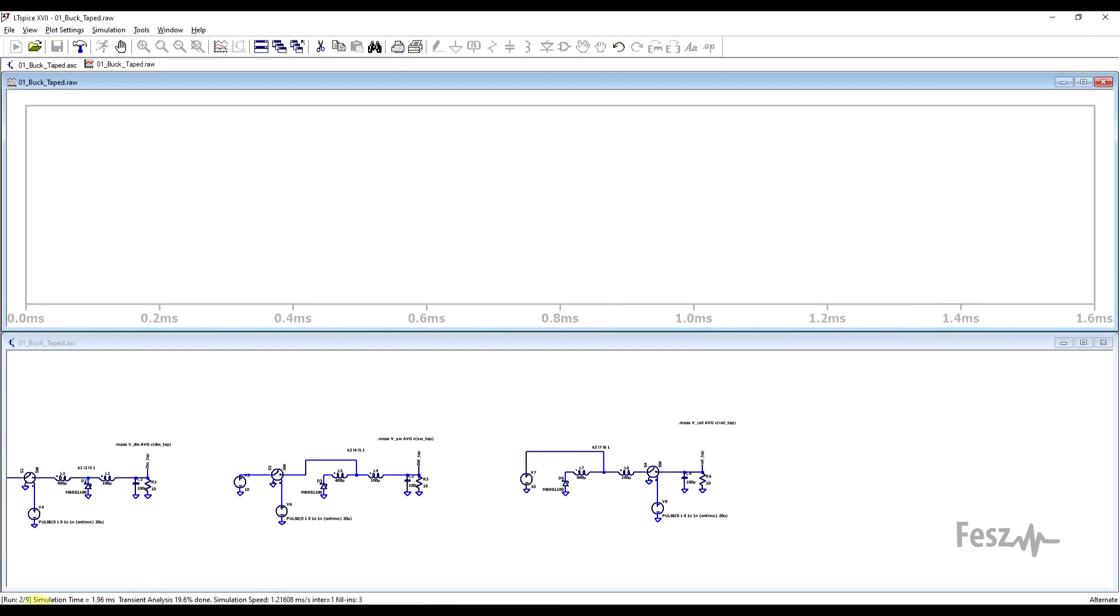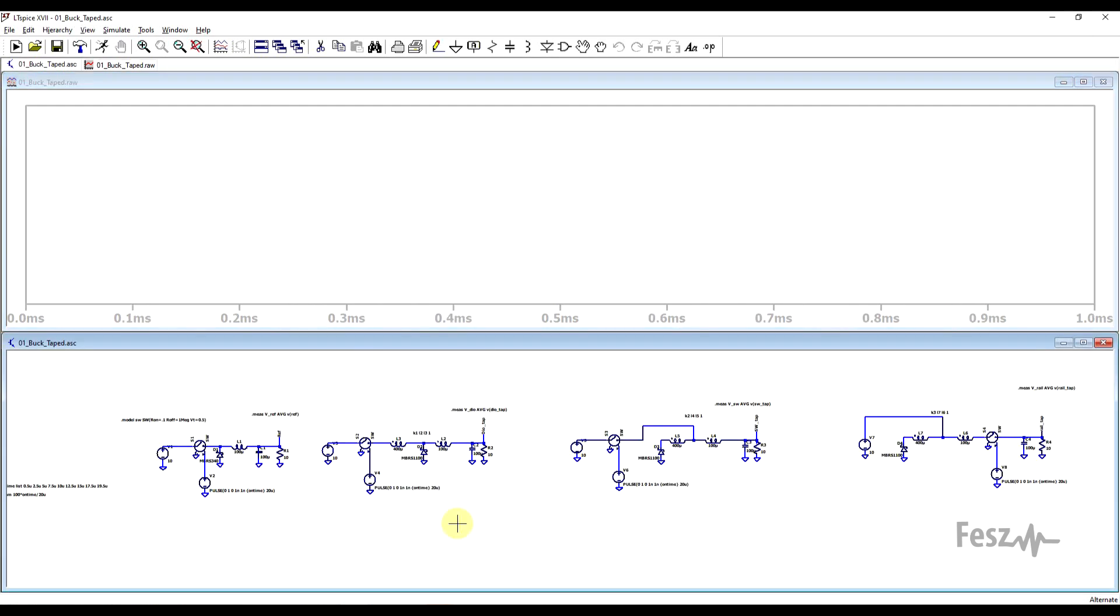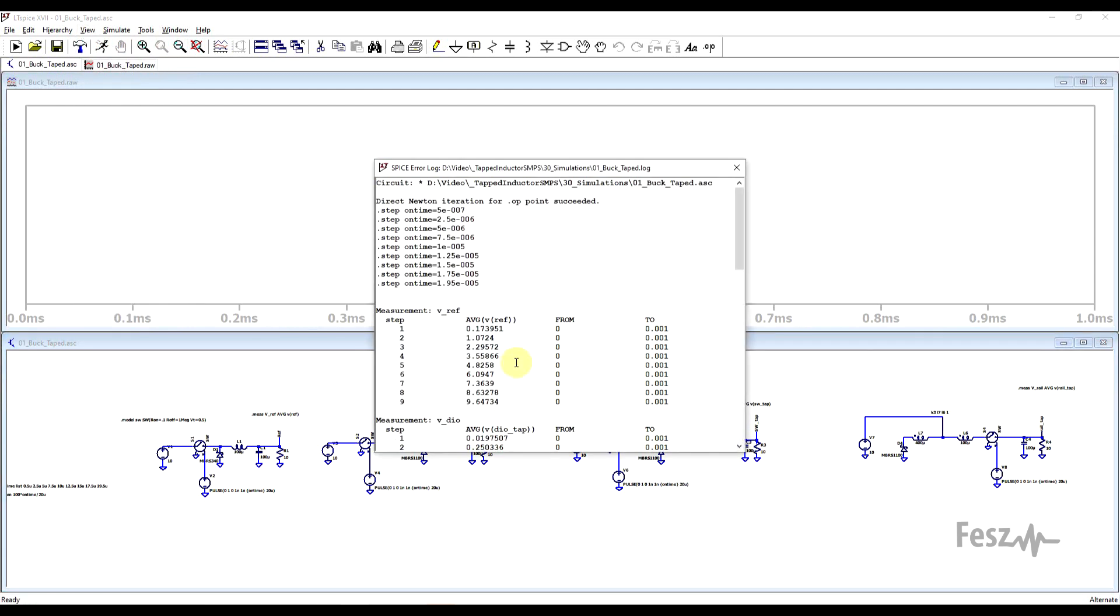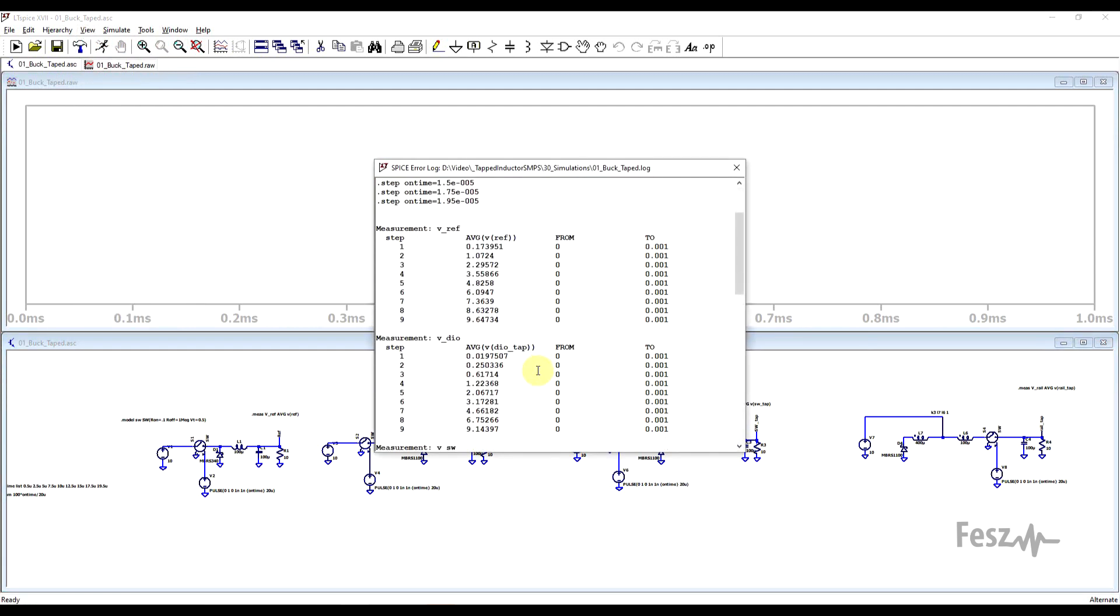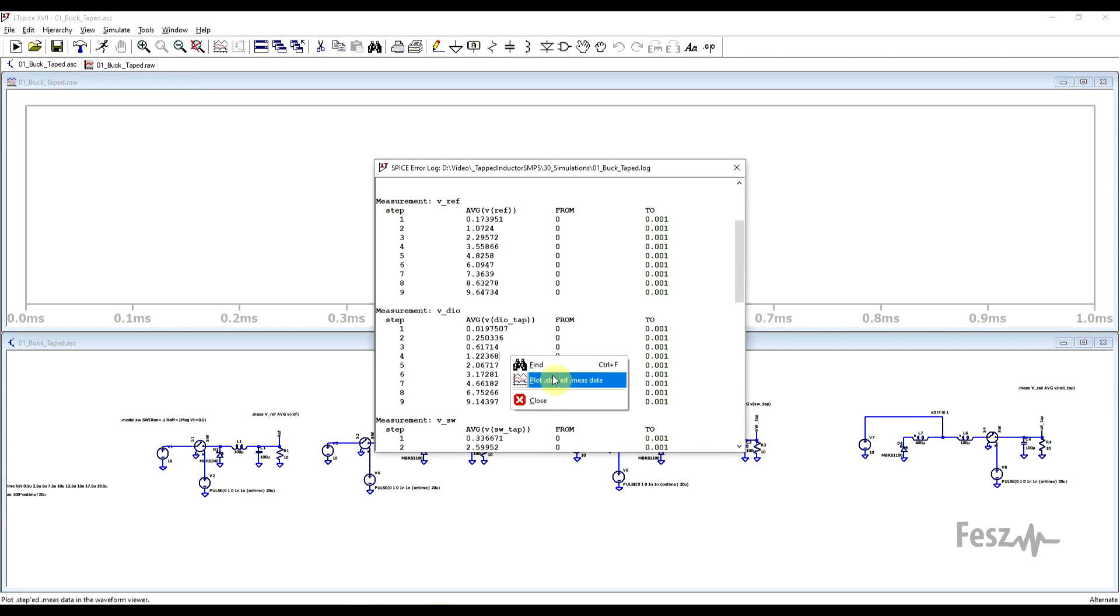Now the simulation does take a while, there are 9 runs to go through, but anyway once the simulations are done, we can look at the results in the error log. So here all of them are listed and can be analyzed one by one, but to make things clear, we can also right-click and select plot stepped measured data.